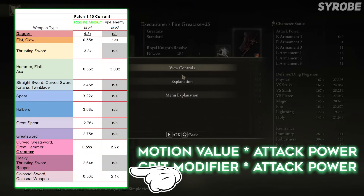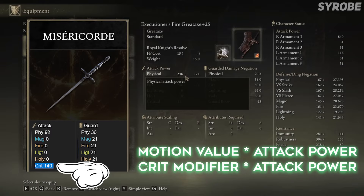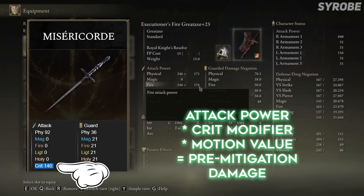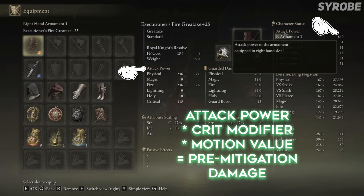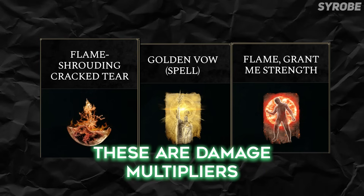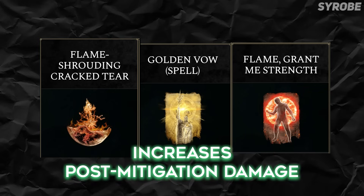Motion values from attacks and critical damage modifiers from your weapons are both factored directly into the attack power number before accounting for enemy defensive stats, which becomes your pre-mitigation damage. If it's not a critical damage modifier nor a motion value, but still increases your damage — like any sort of percent increase buff — it would likely be considered a damage multiplier, and that gets factored in after accounting for defensive stats to your now post-mitigation damage.